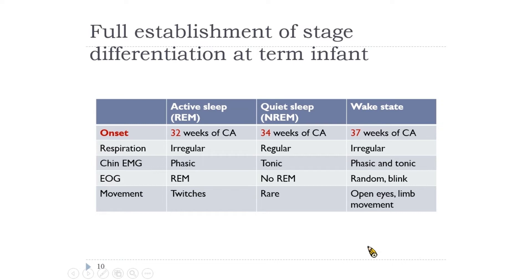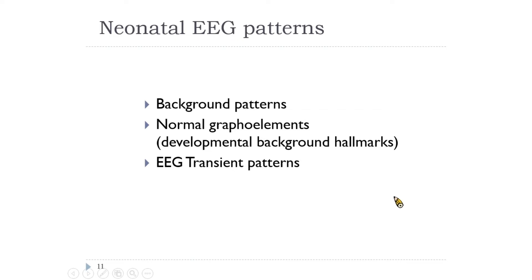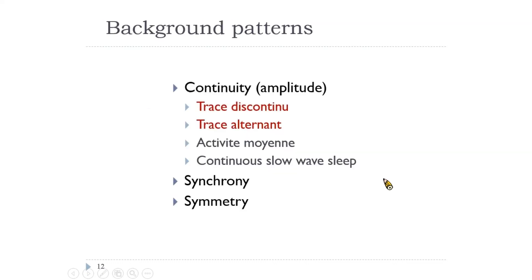At term, there is full establishment of state differentiation. Active sleep with continuous background appears at conceptional age 32 weeks, quiet sleep at 34 weeks, and a more lucid awake EEG pattern at 37 weeks. The visual analysis of a neonatal EEG consists of three components: background activity, background patterns — including normal graphoelements, also known as developmental background hallmarks — and EEG transient patterns. In background patterns, we should check the continuity, synchrony, and symmetry.